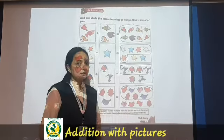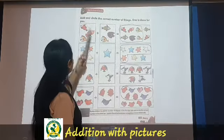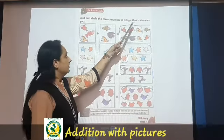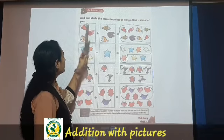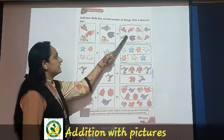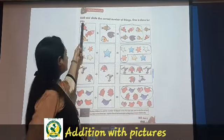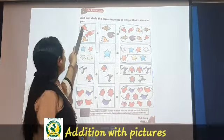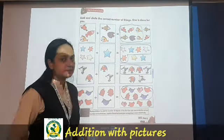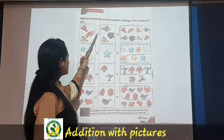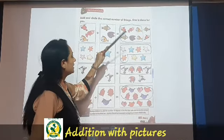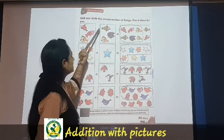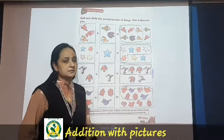Now all of you turn your page. See over here: Add and circle the correct number of fish. The first one is done for you. We have to add and then circle. In the first set, how many fish can you see? 1, 2 and 3 fish. Plus the next set — we count fish here: 1, 2 and 3. So we have 3 plus 3 fish.